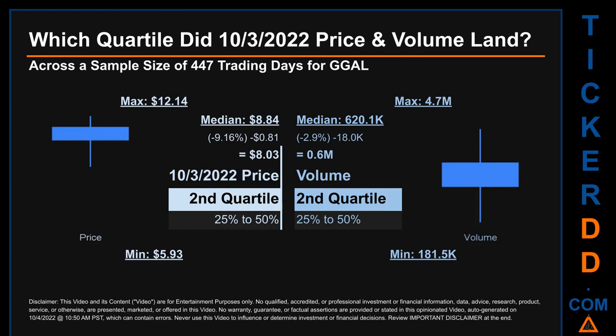The day's volume also landed within the second quartile — that is, within the 25 to 50 percent range of all sampled daily volume — which saw a max daily volume of 4.7 million and a minimum of 181,500. Quartiles tell us about the spread of a data set by breaking it into quarters. Descriptively, GGAL has a median price of $8.84; therefore, the October 3rd, 2022 price was lower than that middle marker by 9.16 percent. The day's volume of 0.6 million was less than the median by 2.9 percent.